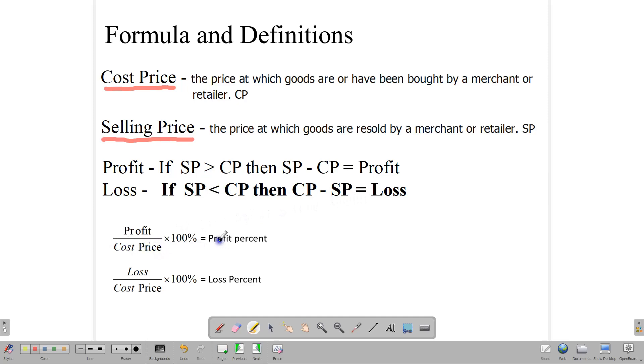If you are calculating profit percent, then profit percent is the profit using the cost price as a base. So profit over cost price times 100%, and that gives you your profit percent.